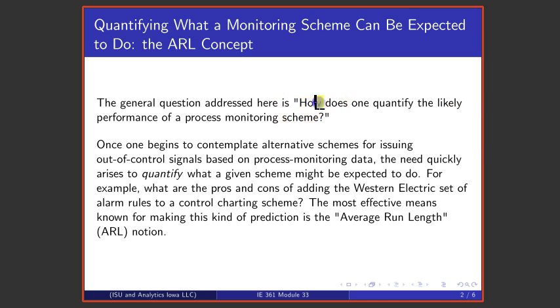So the general question is this: how does one quantify the likely performance of a process monitoring scheme, like a simple Shewhart control chart? One needs to quantify what a scheme would do because one needs to think, well, if I use all four Western Electric rules, how does that change the way that my process monitoring scheme operates? Qualitatively, it seems like it ought to increase the likelihood of false alarms, that is, declaring that there's something changed in a process when in fact nothing has changed. But in order to do that quantitatively, one really needs some additional concepts, and so we're going to talk about this so-called average run length notion.